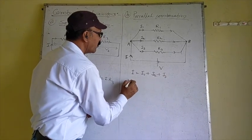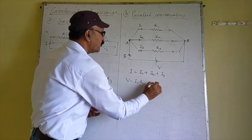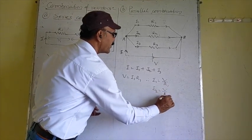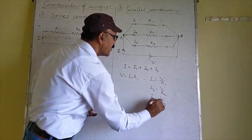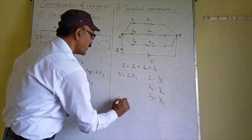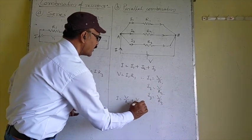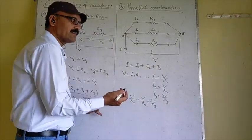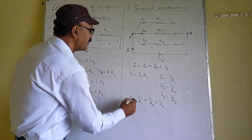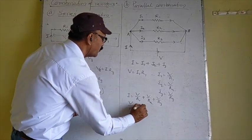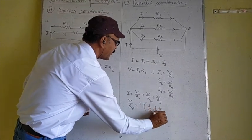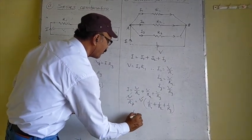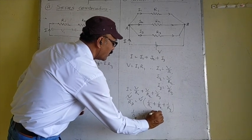Since V = I1·R1, we get I1 = V/R1. Similarly, I2 = V/R2, and I3 = V/R3. Putting in the values: I = V/R1 + V/R2 + V/R3. Here I is the equivalent current and V is the equivalent potential. Suppose the net resistance in the Parallel Combination is Rp. So V/Rp = V·(1/R1 + 1/R2 + 1/R3). Cancelling V, we get 1/Rp = 1/R1 + 1/R2 + 1/R3.